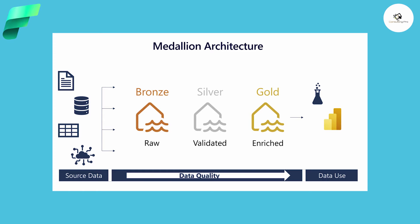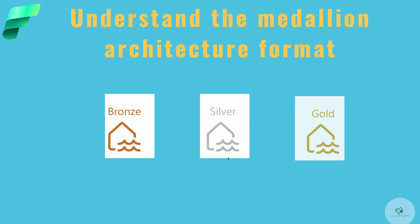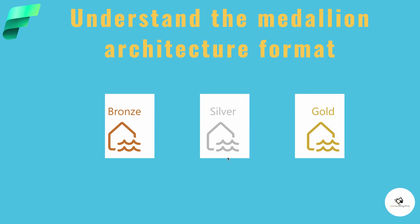Now let's understand the bronze, silver, and gold layers in more detail. The bronze layer, also known as the raw layer, is the very first layer of the Lakehouse. The Lakehouse is a combination of your Delta Lake plus a data warehouse — it has both properties and serves both purposes, which is why we call it a Lakehouse.